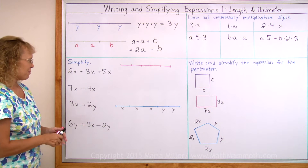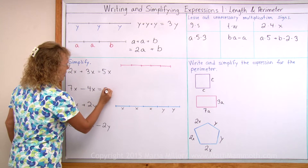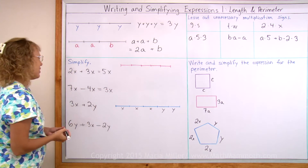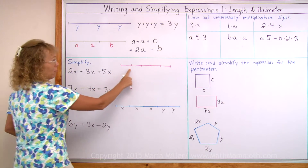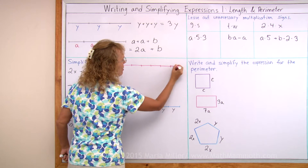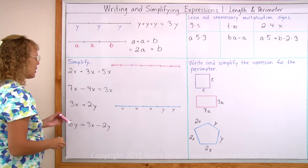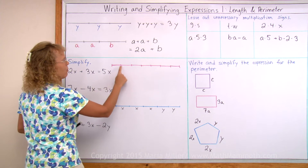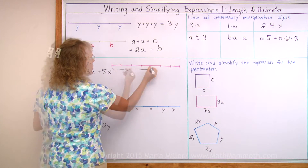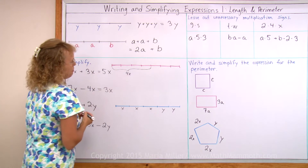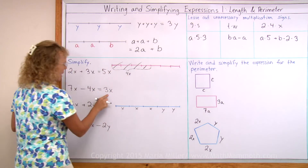7x minus 4x — again it's pretty easy to guess that when you simplify this you get 3x. If you look at these lengths: let's make it 7x long. And now I take away 4x — I take away x plus x plus x plus x. This much here would be 4x. And if you take those away, then what you have left is 3x.